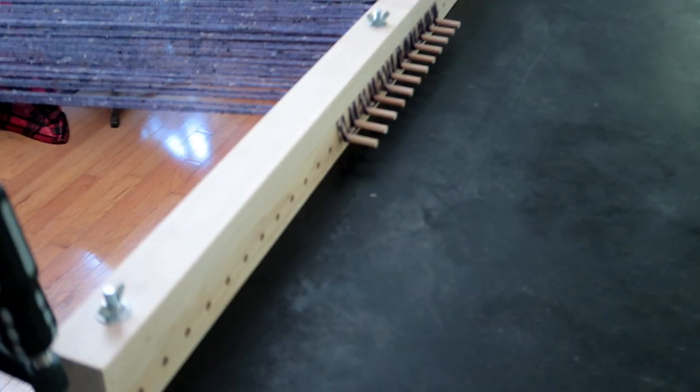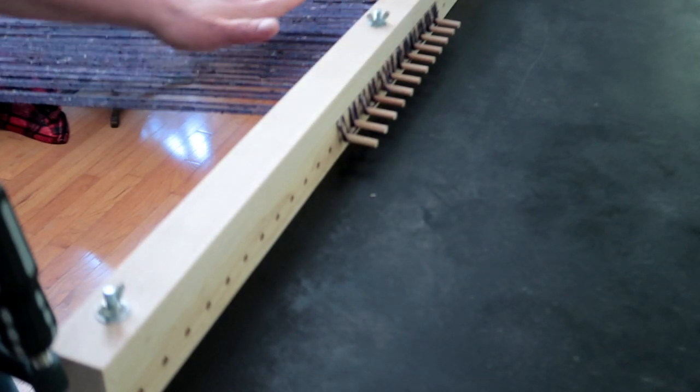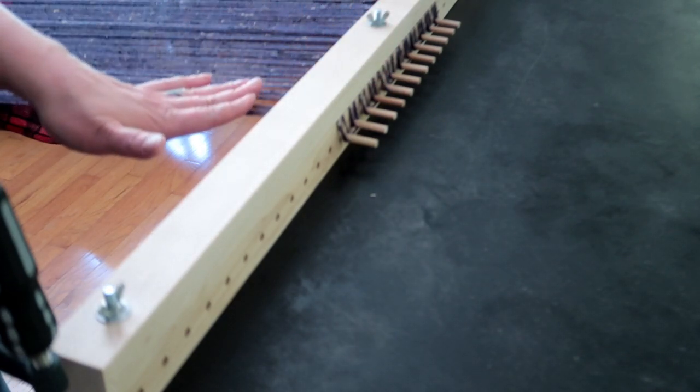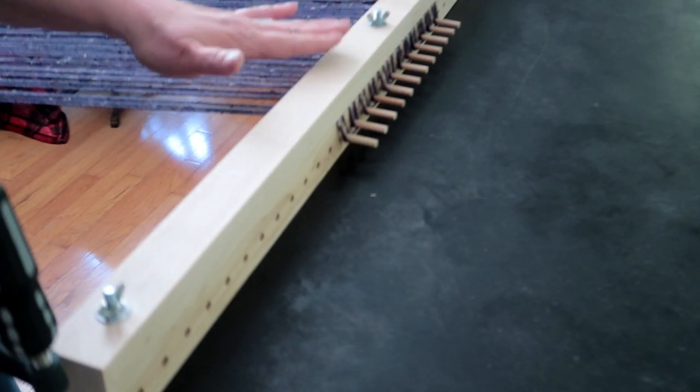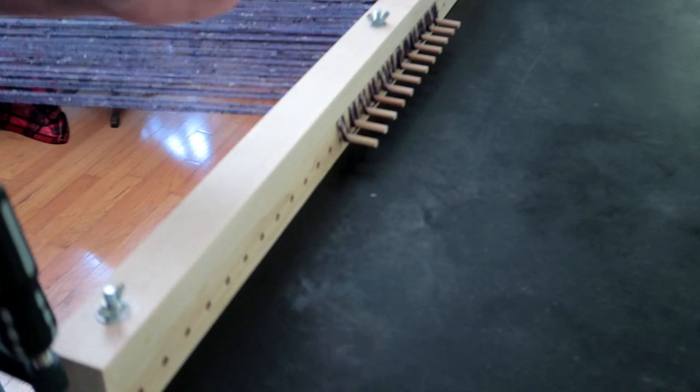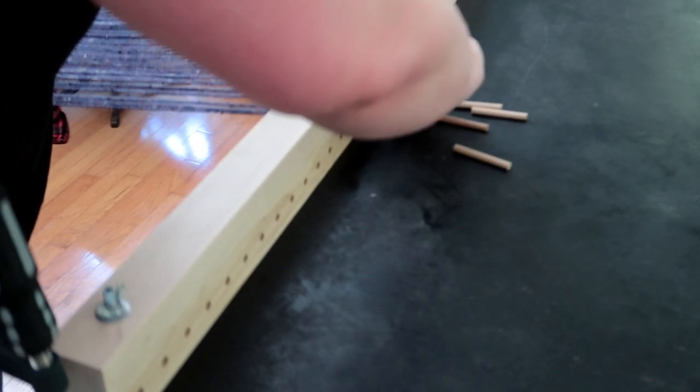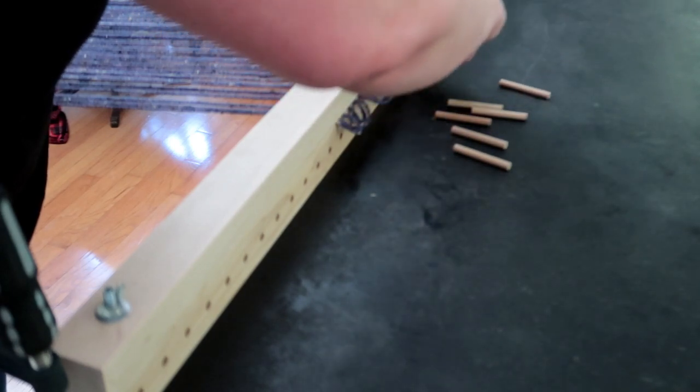It's as easy as that. This warp is now stretched along here really tight, and it is going nowhere. So I take all my pegs out. You can see those loops don't go anywhere, which is exactly what you want.